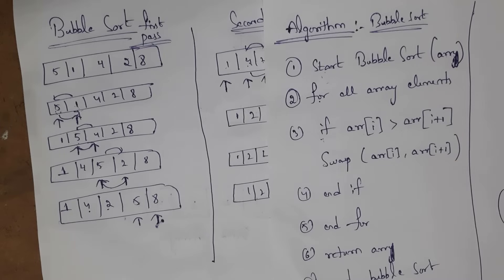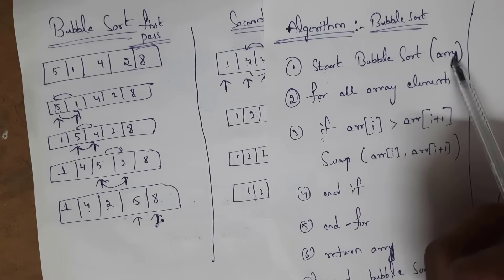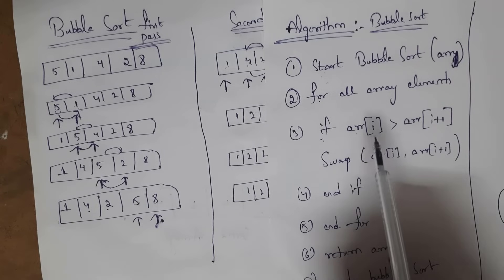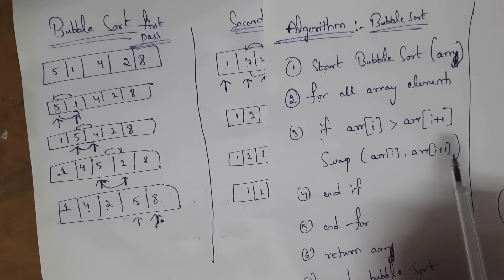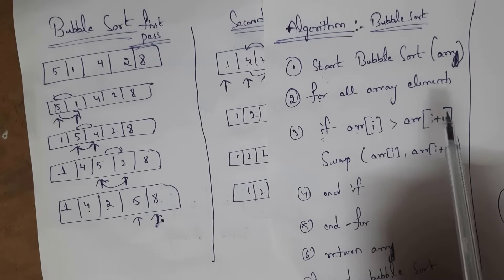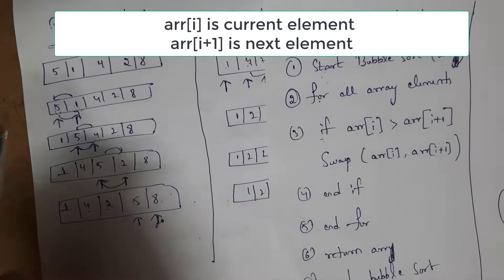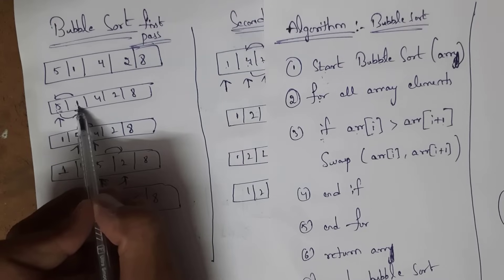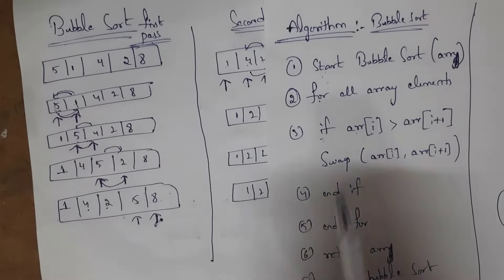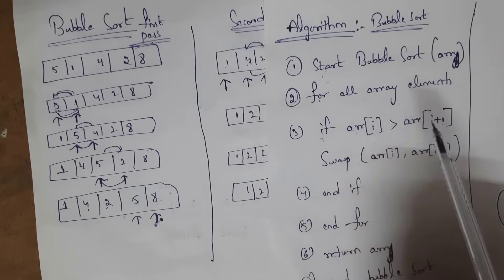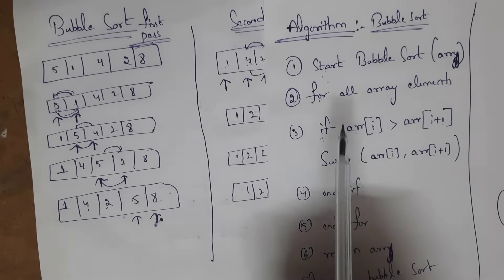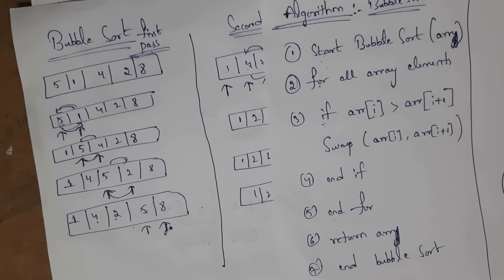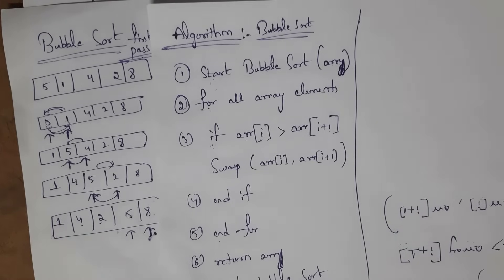Now I will explain the algorithm for bubble sort. Step 1: Start. Step 2: BubbleSort(array). Step 3: For all array elements — if array[i] is greater than array[i+1], swap array[i] and array[i+1]. That means if the first element is greater than the next, we swap them. Step 4: End if. Step 5: End for. Step 6: Return array. Step 7: End BubbleSort. Remember the definition: we swap adjacent elements if they are in the wrong position.